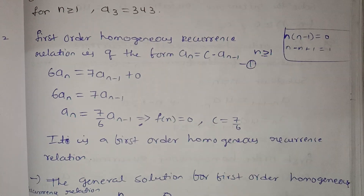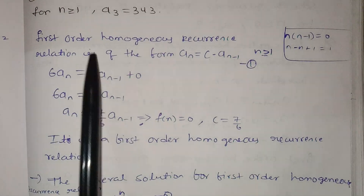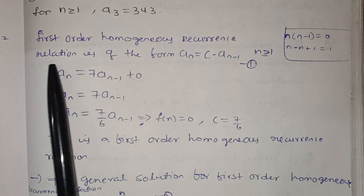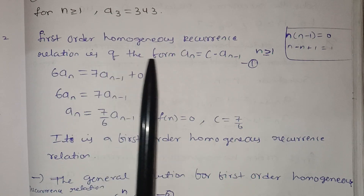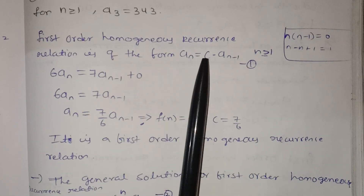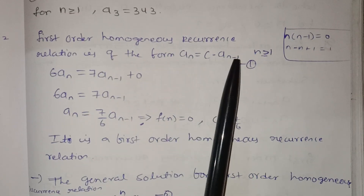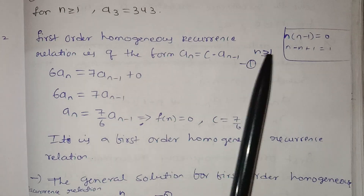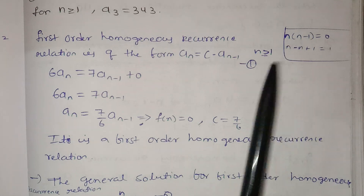The first-order homogeneous recurrence relation is of the form: aₙ = c · aₙ₋₁, for n ≥ 1.